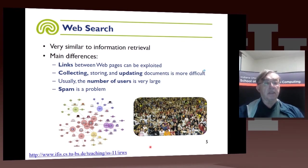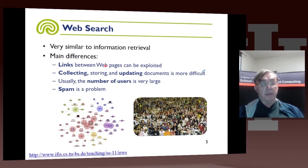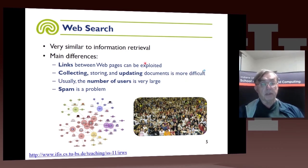Looking at the special case of information retrieval called web search, the web has some special features: web pages are linked together in a clear fashion through hyperlinks. Books are linked by citation, but that link is less strong, though it's still useful for finding other documents in the same field. Compared to other types of information retrieval, the number of documents, diversity of documents, and rate of change is very high. And there is also a lot of spam and a lot of users trying to find information.